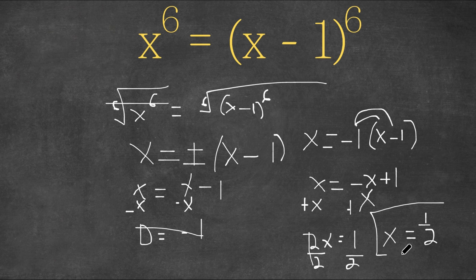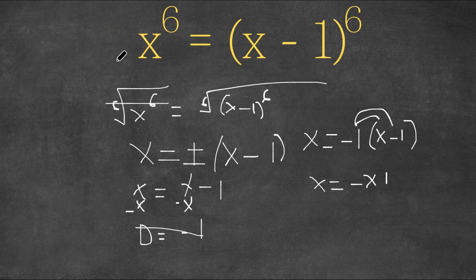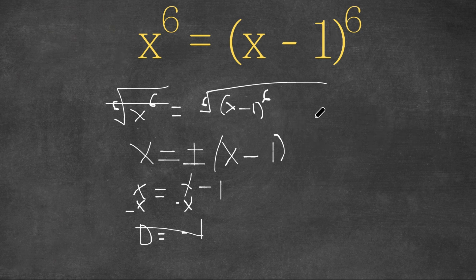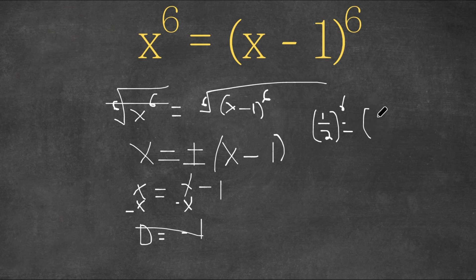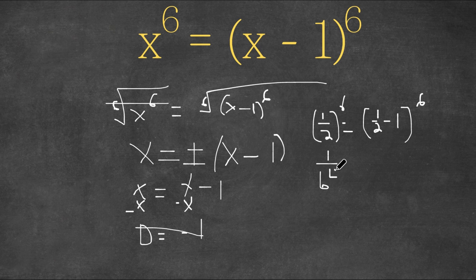x equals 1/2 is our answer. Now let's verify by plugging 1/2 into the original equation: (1/2) to the power of 6 equals (1/2 minus 1) to the power of 6. The left side, (1/2)^6, equals 1/64.